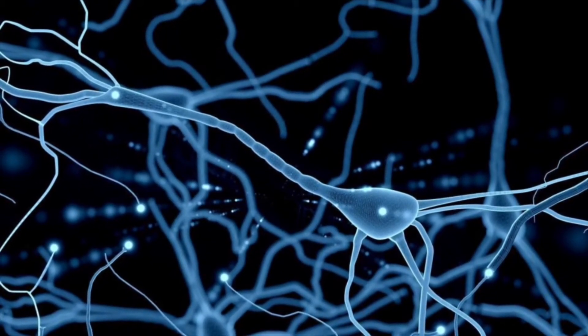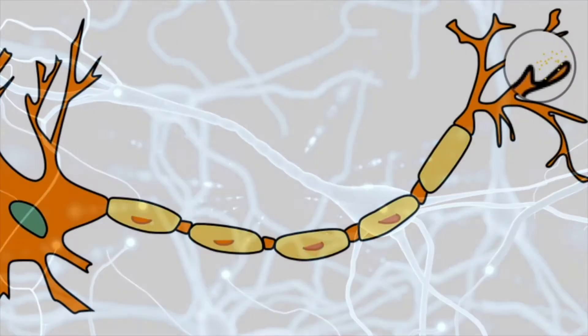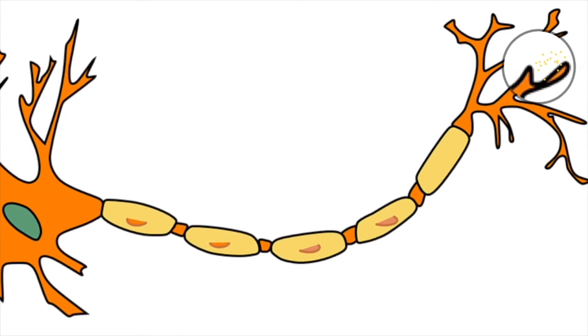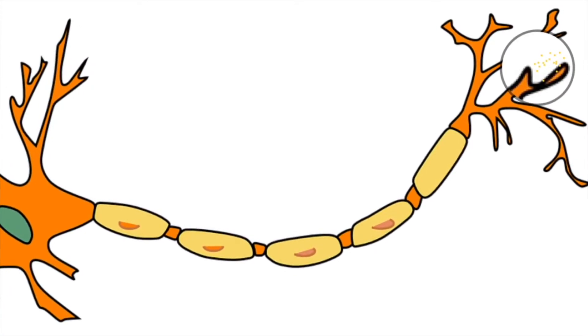Axons carry information out of the neuron. Dendrites receive information and axons send information.